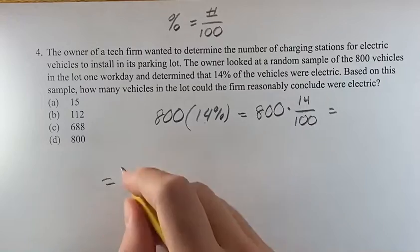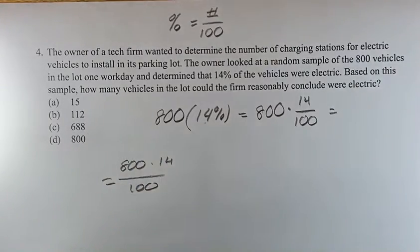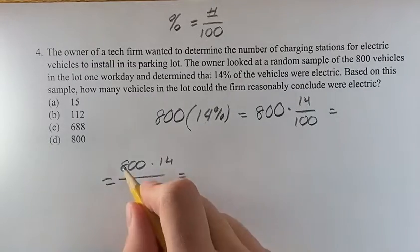What that means is you have 800 times 14 over 100. Again, you could plug this into a calculator, but if you can't do that,